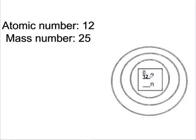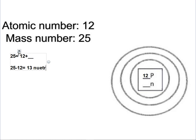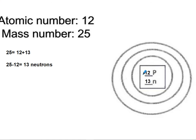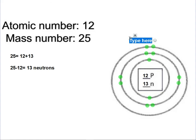The next one has atomic number 12, so that's the number of protons. Figure out the number of neutrons the same way: the mass number equals protons plus neutrons. I'll reverse this: 25 minus 12 equals 13 neutrons. Go back and check: 12 plus 13 equals 25. Then do your electrons — same number as the protons, so two in the first level. The element with atomic number 12 is magnesium, so this is magnesium-25.